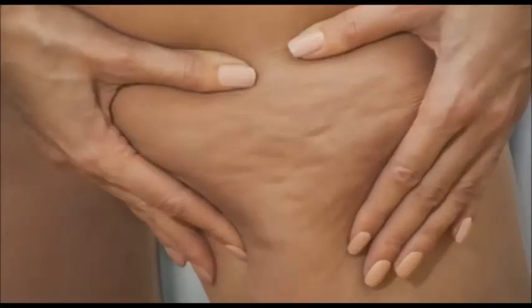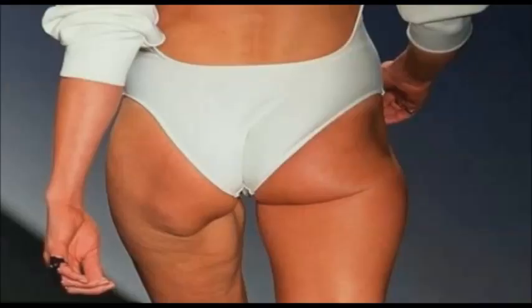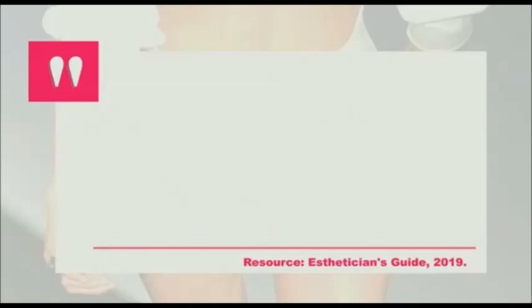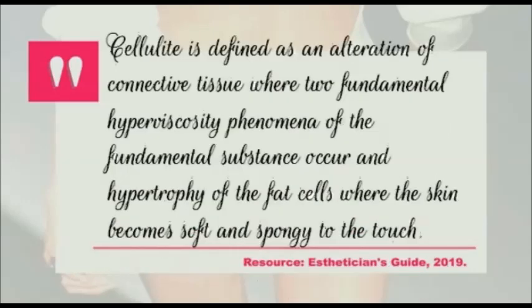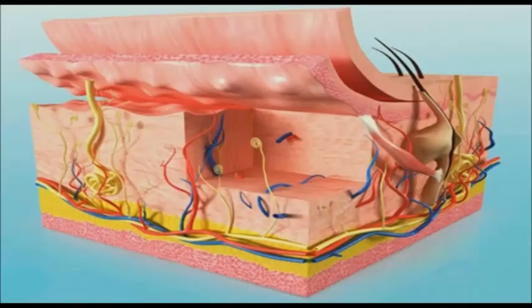Cellulite is defined as an alteration of connective tissue where two fundamental phenomena occur: hyperviscosity of the fundamental substance and hypertrophy of the fat cells, where the skin becomes soft and spongy to the touch.